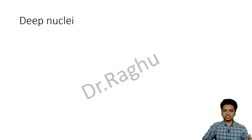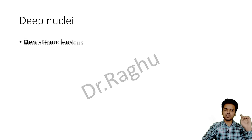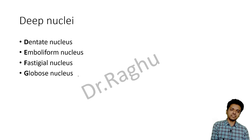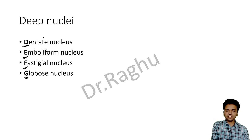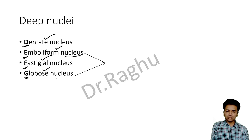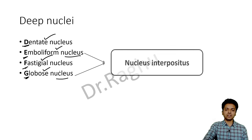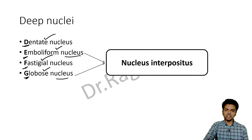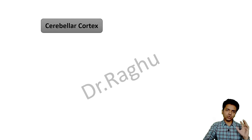In the deeper part of the cerebellum there are four nuclei, remembered by the mnemonic DEFG: D for dentate nucleus, E for emboliform nucleus, F for fastigial nucleus, and G for globose nucleus. The emboliform and globose nuclei together are called the nucleus interpositus.